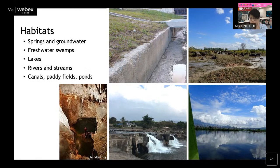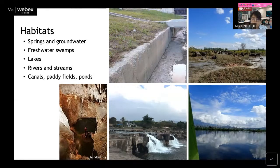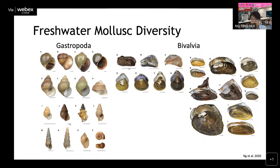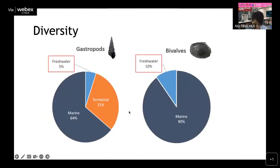These two groups are not directly related, but they share their habitat — freshwater environments. This includes natural habitats like springs, groundwater systems, freshwater swamps, lakes, rivers, streams, and waterfalls, as well as human-modified habitats such as paddy fields, fish ponds, and even drainage ditches outside your home or school. They come in a vast variety of shapes and sizes — not as colorful as land or marine snails, but found across many different habitats.